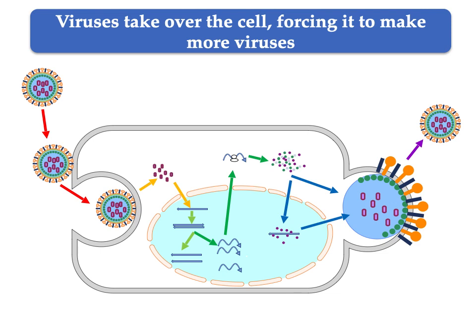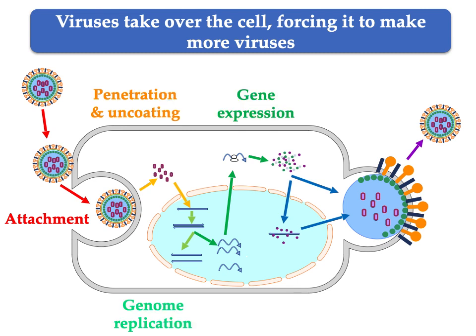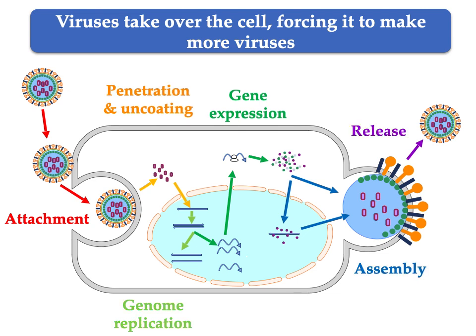Viruses take over the cell, forcing it to make more viruses. Step one is attachment, followed by penetration and uncoating, which release the virus's genetic material into the cell. Through genome replication and gene expression, the viral genetic material reprograms the cell to become a virus factory. New viruses assemble and are released into the extracellular space where they can infect new cells or even new people.